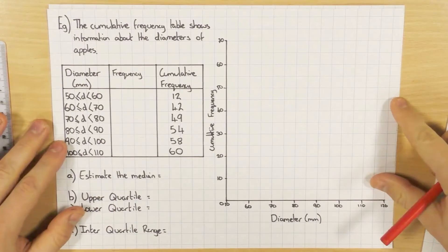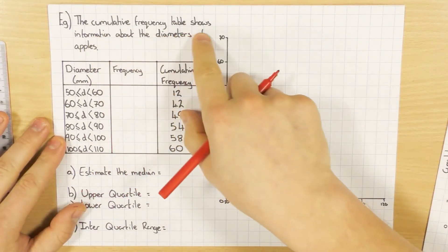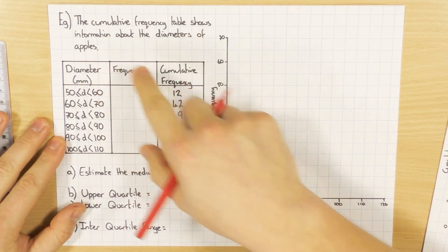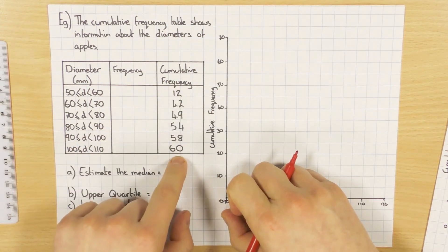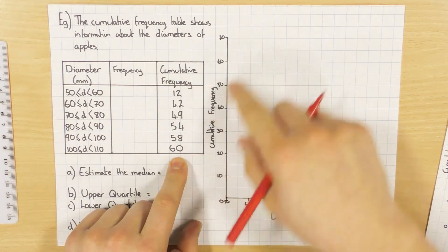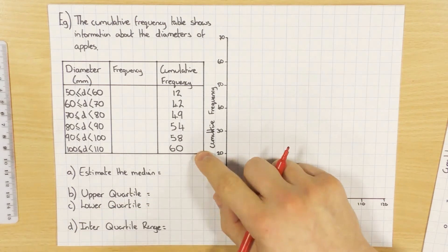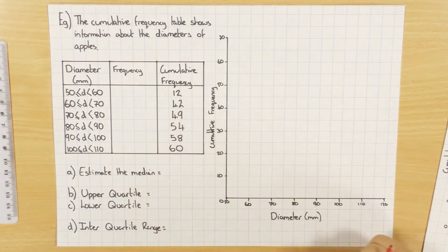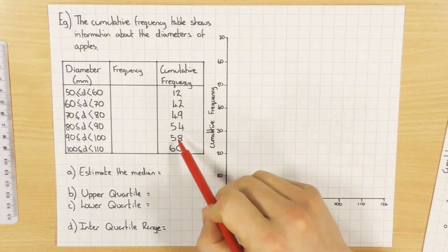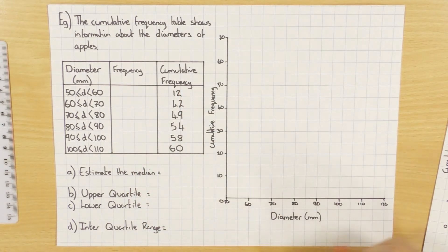So again, very similar here. The cumulative frequency table shows information about the diameters of apples. Very exciting. But this time I've been given the cumulative frequency column here. Now, usually you don't get this because obviously you'll plot it. However, there was a question a couple of years ago where they had a cumulative frequency graph and you had to work out the frequency before working out a histogram. So this is why I've included this one here, where you've been given the cumulative frequency and I actually want to work out what the frequency is.